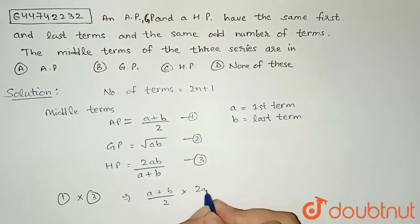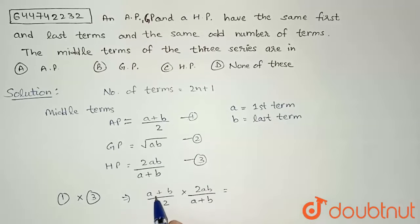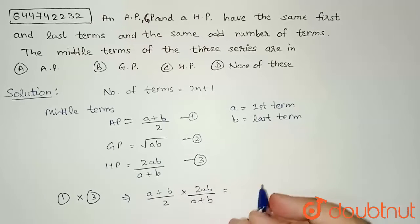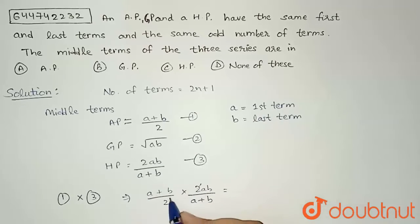(a+b)/2 × 2ab/(a+b) equals... You can see here that a+b and a+b will get cancelled, and 2 and 2 will also get cancelled. Finally we will get ab, and